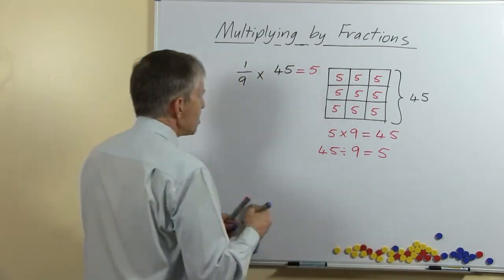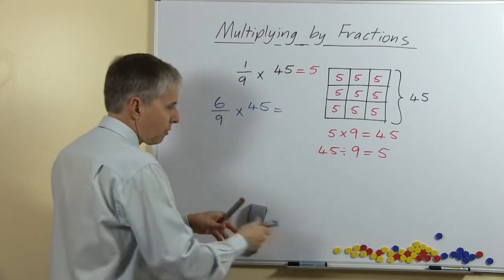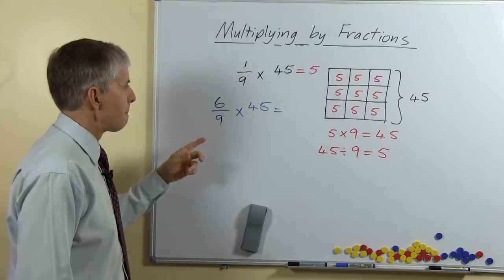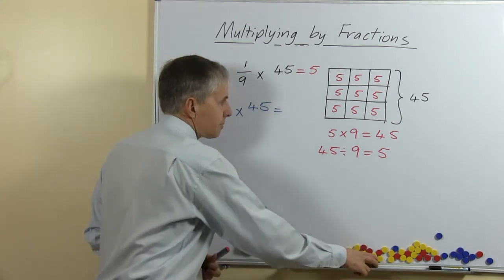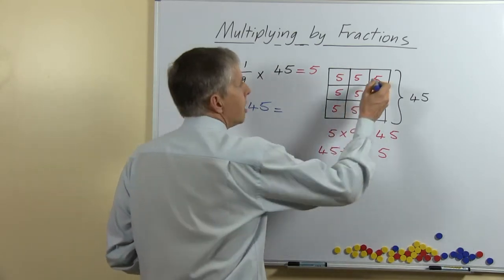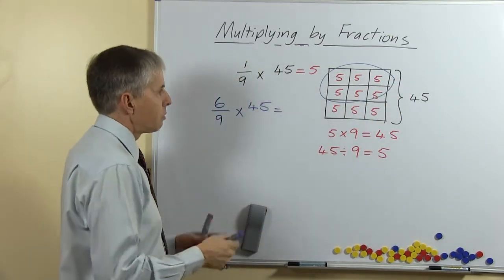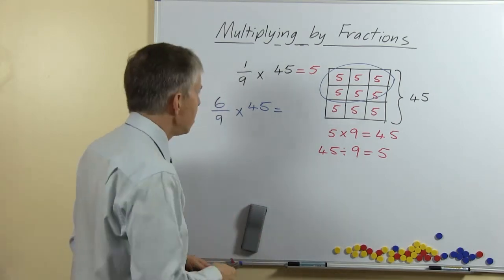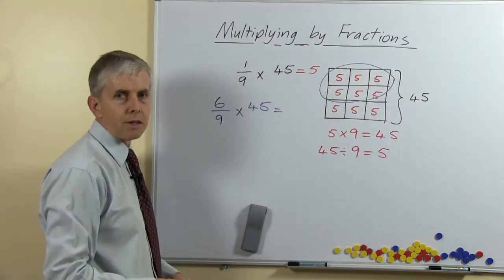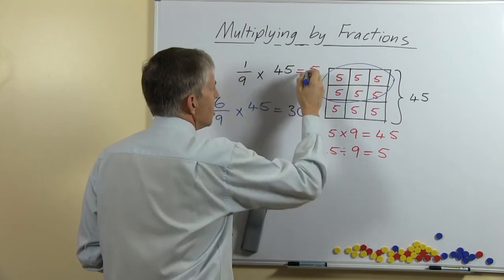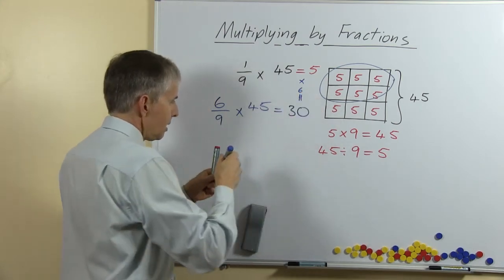Now let's look at the follow-up question: suppose the next question was six ninths times 45. We have the same whole number 45 and the same denominator, but a different numerator. This is now a two-step question, but providing you know the answer to the first one it isn't going to be that hard. Using the diagram the students drew earlier, we ask them to shade or circle six ninths of the shape. Since there are 5s in each of the ninths, six of those equals 30 — there's our answer, and we can write 5 multiplied by 6 equals 30.